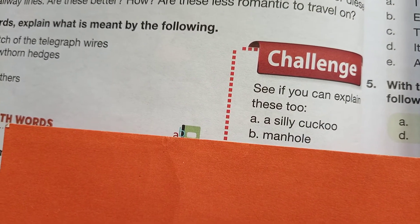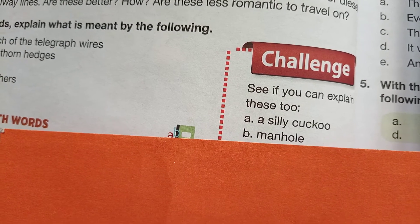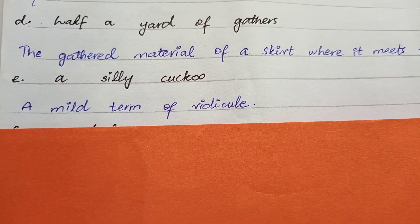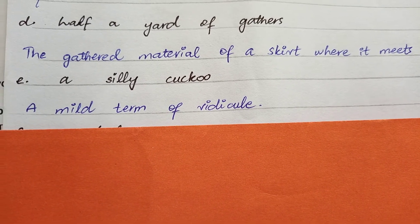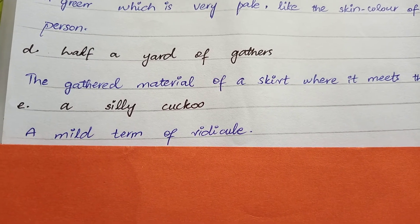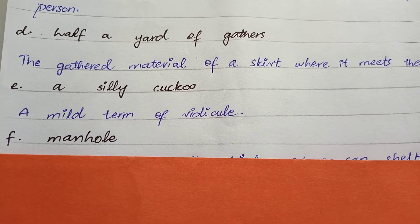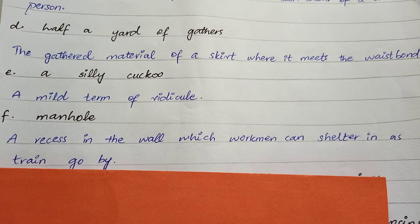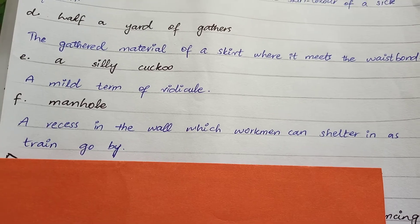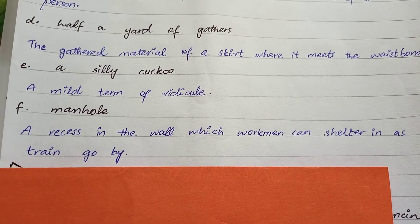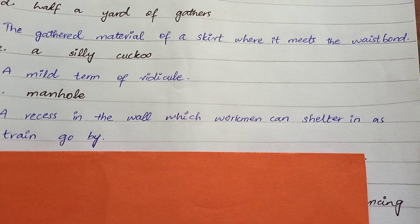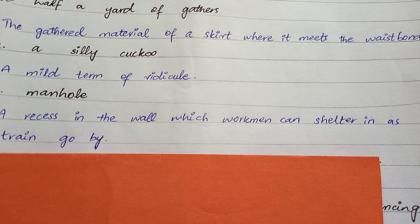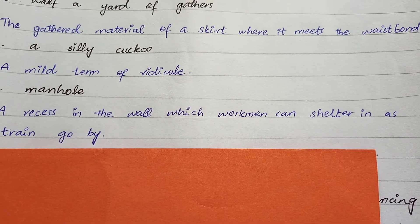The remaining two phrases from the box are 'a silly cuckoo' and 'manhole.' A silly cuckoo is a mild term of ridicule — مزاح کرنے کے لیے ایک soft term جو ہم use کرتے ہیں۔ Manhole refers to recesses in the wall where workmen can shelter as trains go by — دیوار کے اندر ایک محراب جیسی جگہ جہاں کام کرنے والے آدمی shelter لیتے ہیں جب train سُرنگ میں سے گزرتی ہے۔